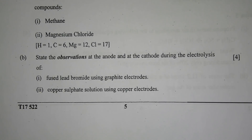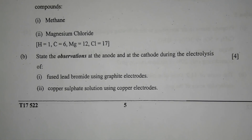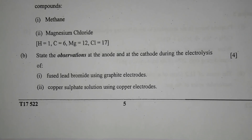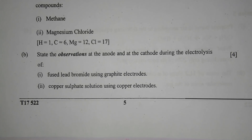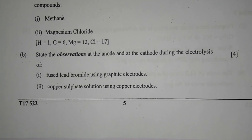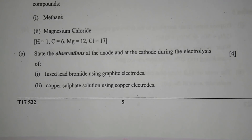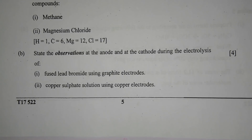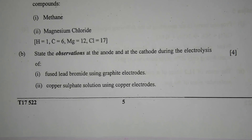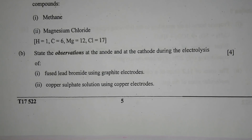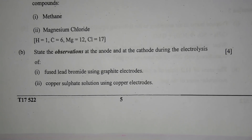Question 3b: state the observations at the anode and cathode during electrolysis. Number 1 — fused lead bromide using graphite electrodes: at the cathode, greyish white lead is formed, whereas at the anode, reddish brown fumes of bromine gas are produced.